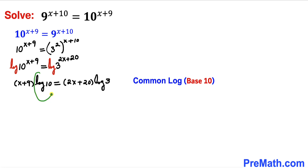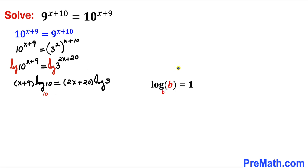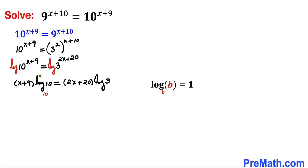Now let's focus on this log — its base is missing. Such a log is called the common log, whose base is 10 by default. So whenever the base is missing it's got to be 10. Now let's recall the basic logarithmic rule: as long as the base and the argument are the same, this is always equal to 1. We have log base 10 of 10 — identical numbers — so this has got to be 1. Therefore our equation becomes (x+9) times 1 equals (2x+20) times log(3).